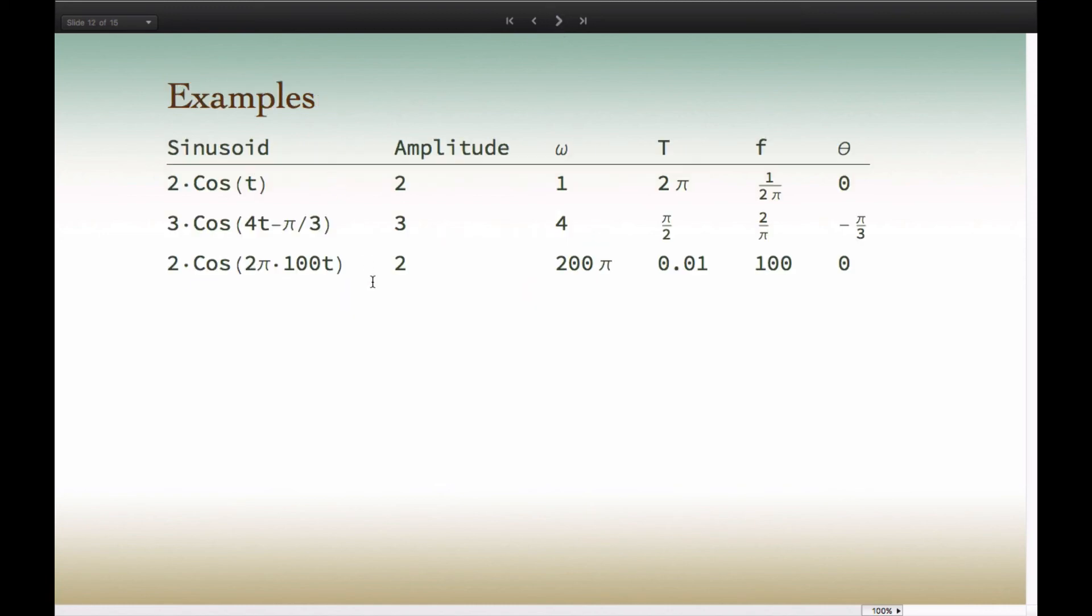Here are some examples of some sinusoids. For example, 2 cosine t has an amplitude of 2. Omega, we see, is 1. So the period of this function is 2π. Frequency is the reciprocal of that. Phase shift would be 0. In this next example, omega is equal to 4. So the period 2π over 4 would give you a period of π over 2. And notice there's a phase shift.